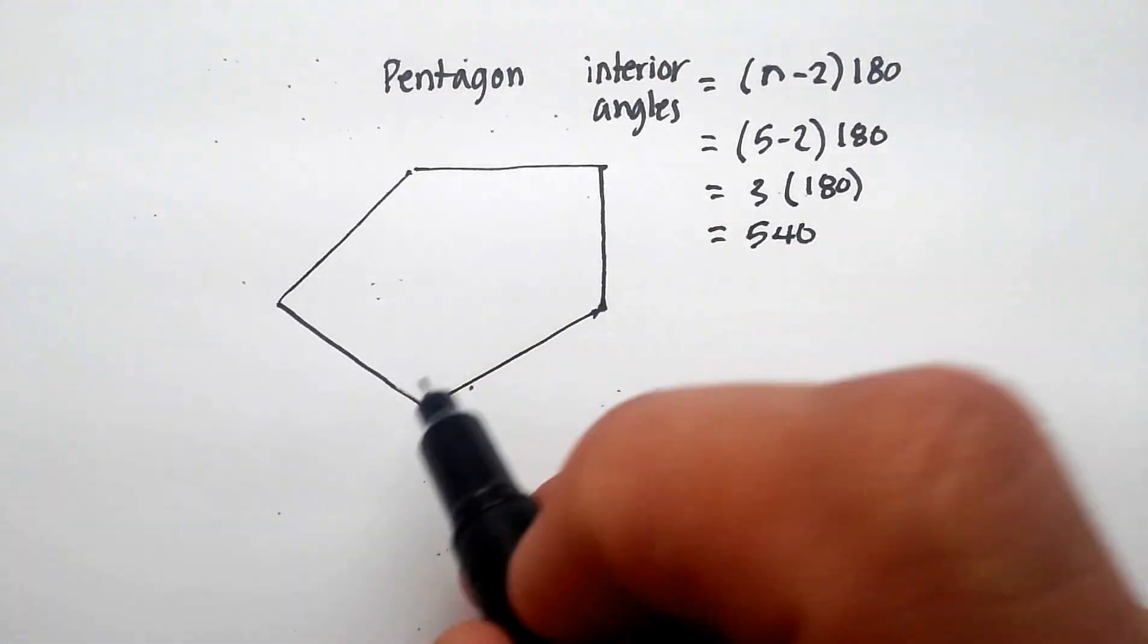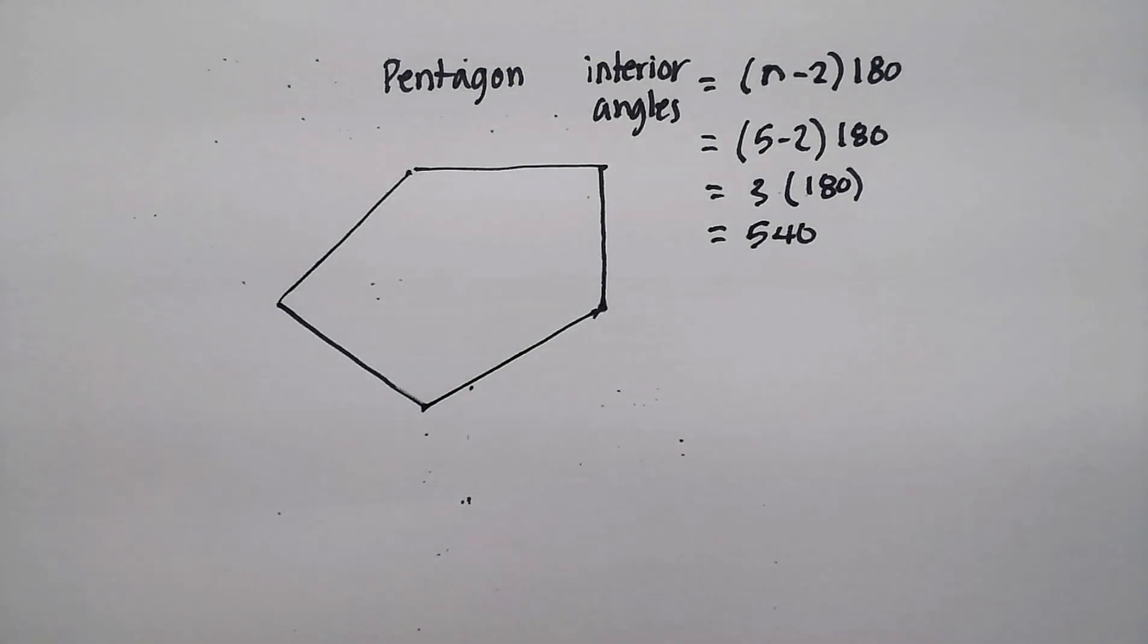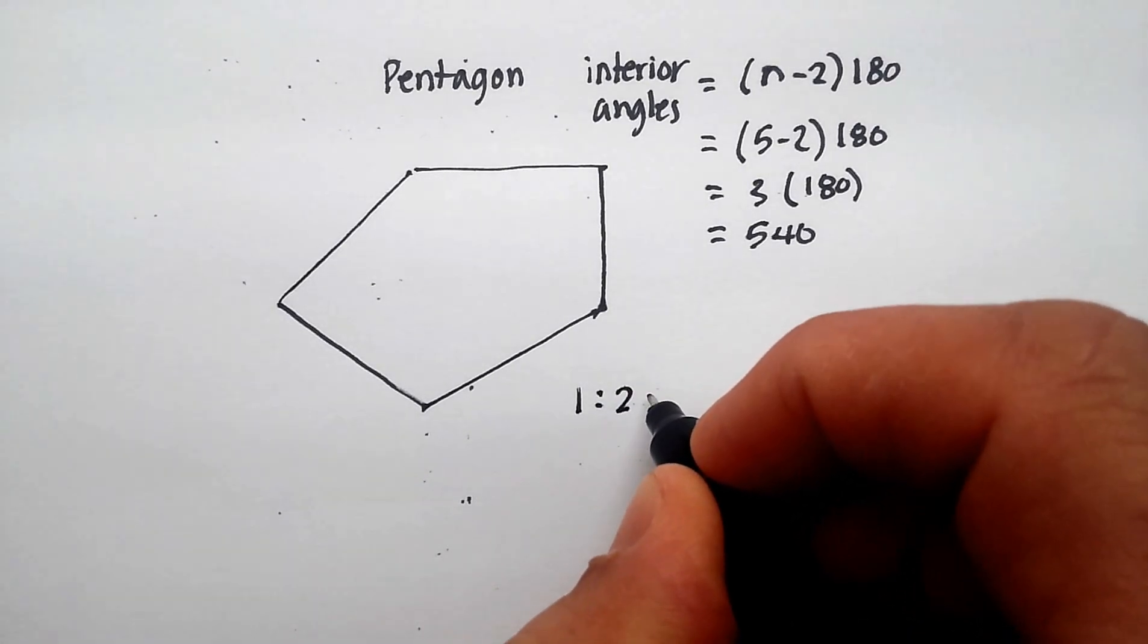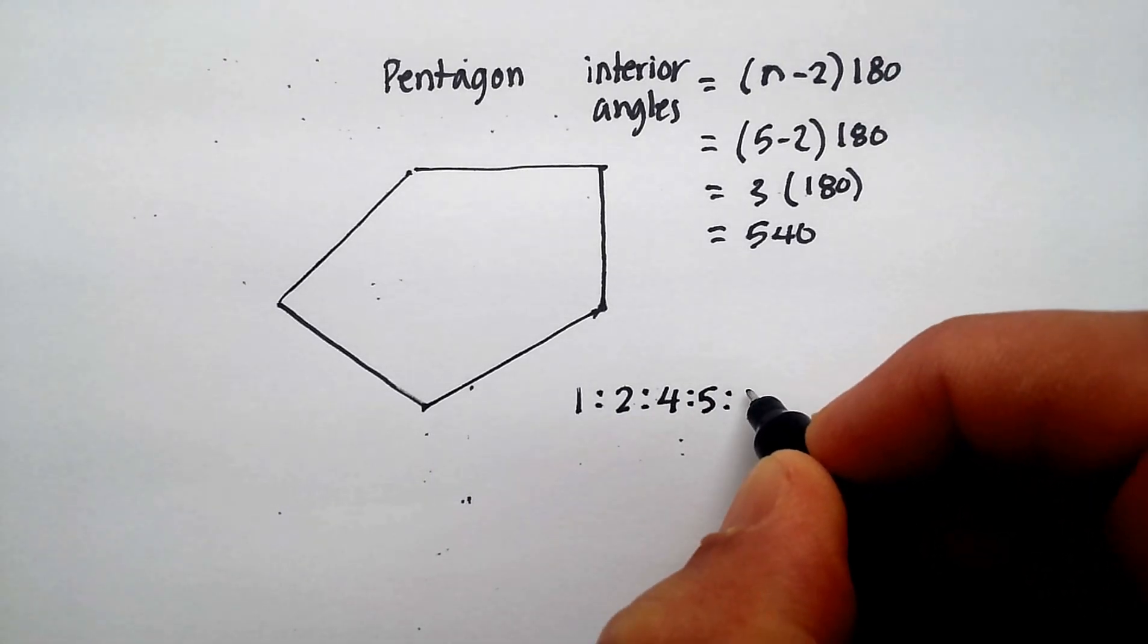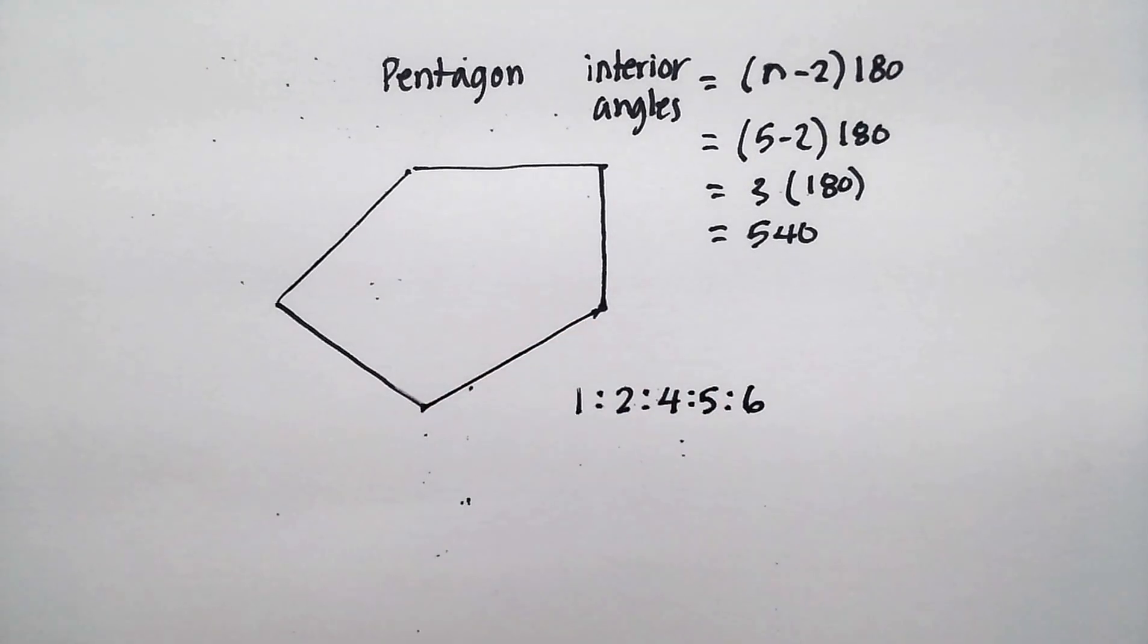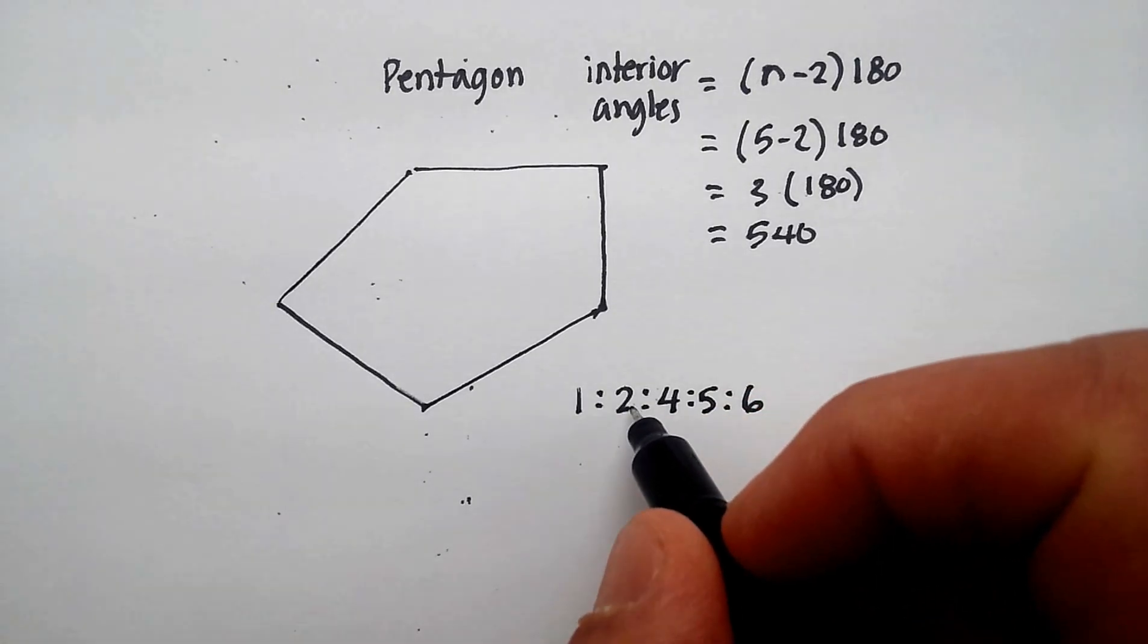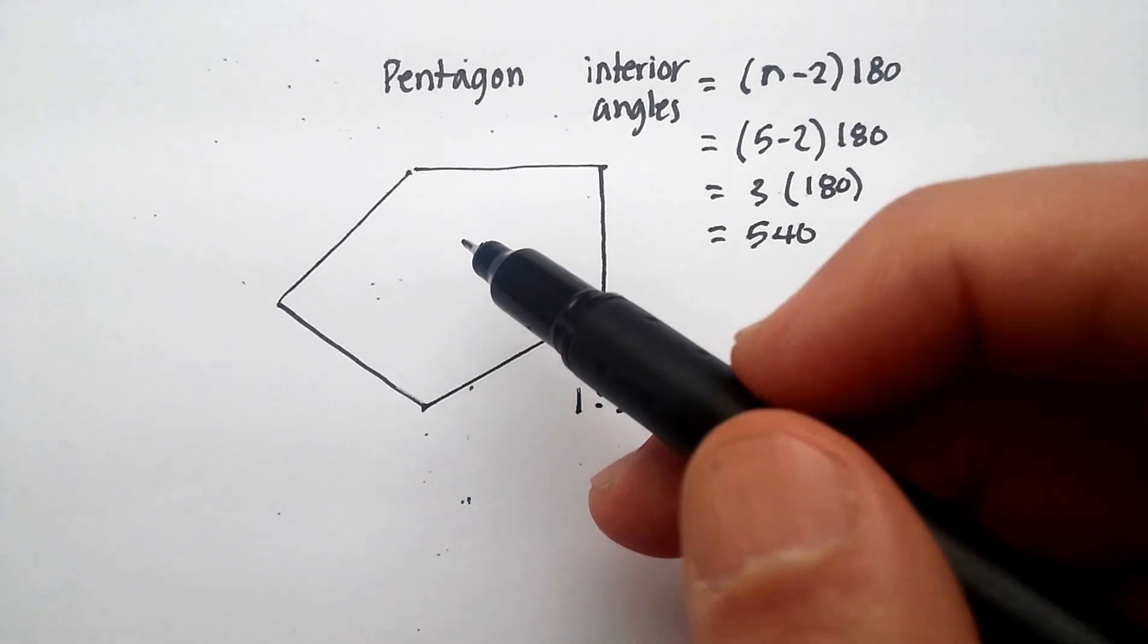Let's say I also know that the ratio of the interior angles of this particular pentagon are as follows: 1 to 2 to 4 to 5 to 6. How can I figure out what the interior angles are, each one of these individually? Using the similar logic that we did in the last example, we would just do this. And again, it doesn't really make any difference which one's which because these aren't necessarily all drawn to scale.